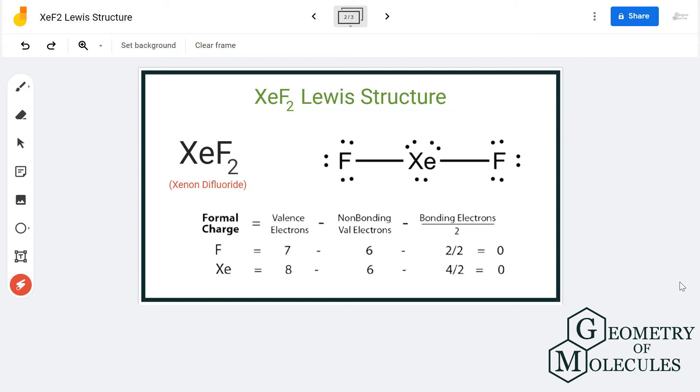Because fluorine is the most electronegative atom and it cannot form a double bond, what we will do is we will place these two electrons on xenon. So now it has more than eight electrons in its outer shell, and that is fine because as I said earlier, it is an exception to the octet rule.